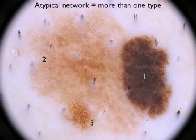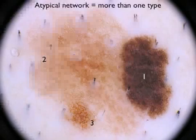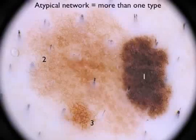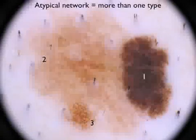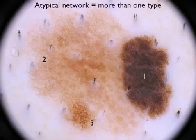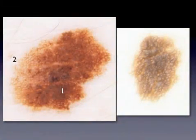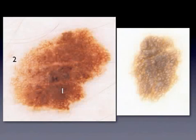The network is definitely atypical because of the presence of three different types: a prominent type on the right, a delicate type on the left, and an intermediate type in the lower part of the lesion. This is enough to diagnose a melanoma — only one feature, but clearly atypical. This is another lesion showing network as a single feature, but we can consider this lesion as a banal reticular nevus because there is one type of network, thus typical. Here, a melanoma in situ on the left and a reticular nevus on the right. The network on the left is atypical because of the presence of two different typologies, whereas the network on the right is typical — just one type.